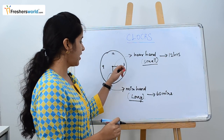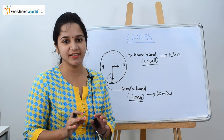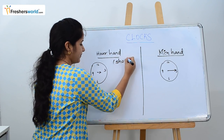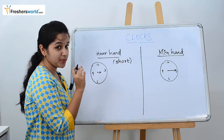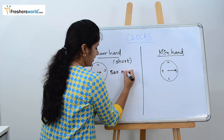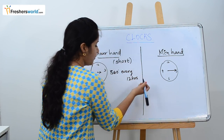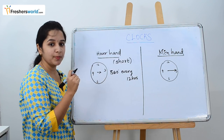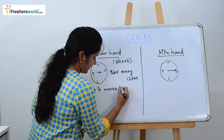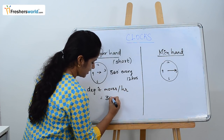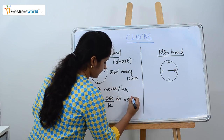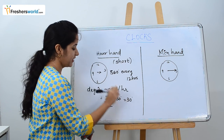Let us understand how much the hour hand and minute hand move across 360 degrees. Let's take the hour hand — we also call it the short hand. The short hand moves 360 degrees every 12 hours. So, per hour it moves 360 divided by 12, which is 30 degrees. The hour hand moves 30 degrees per hour.